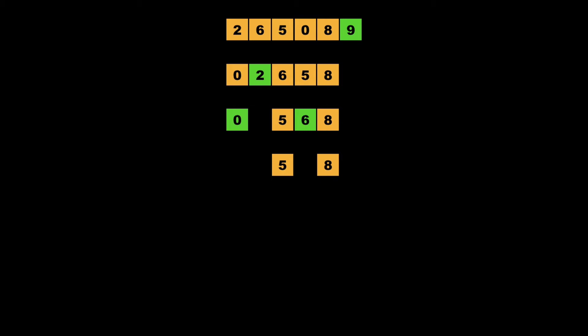Then again our next pivot is 5. Since 5 is at its correct location we proceed further and choose our next pivot 8. Since 8 is also at its correct location, we finally get a sorted array as 0, 2, 5, 6, 8, 9.